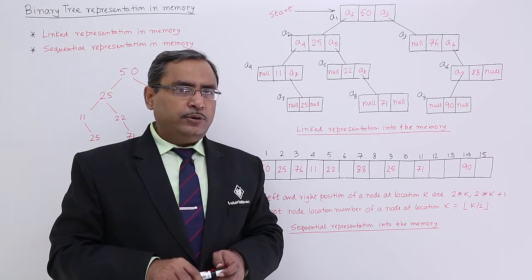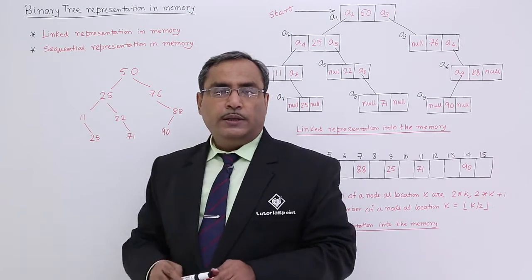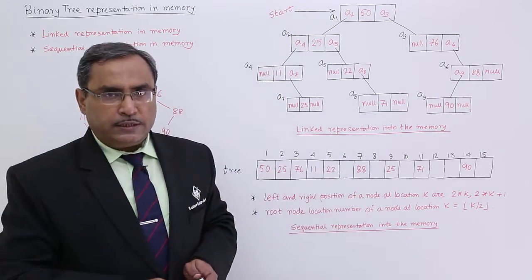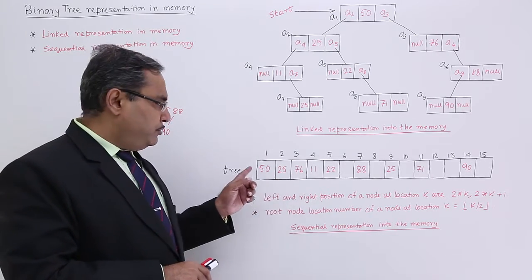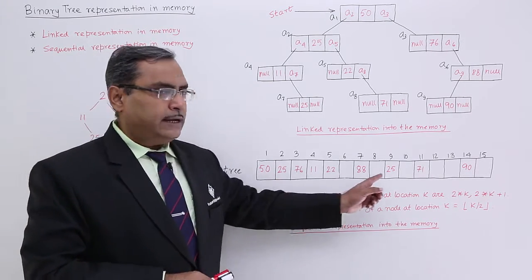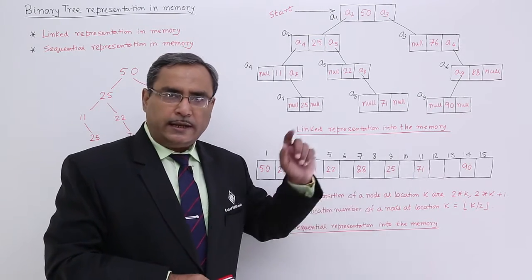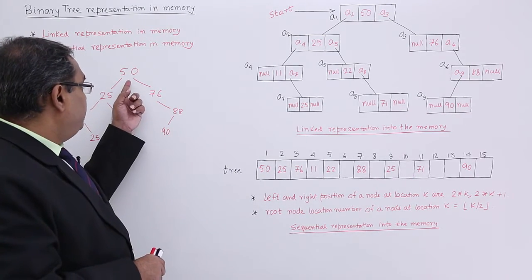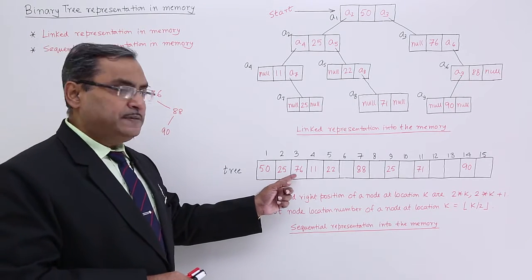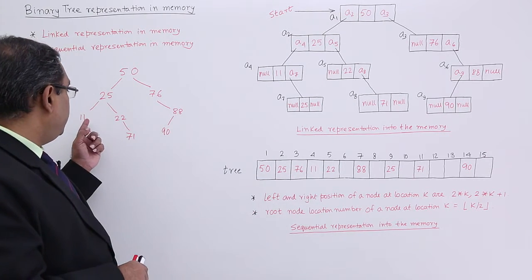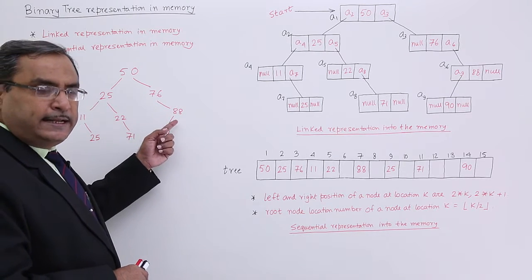Now let us come to the sequential representation — that is representation method number 2. In case of sequential representation, the tree will be represented in a one-dimensional array. For example: 50, 25, 76, then 11, 22, blank space, 88.